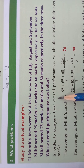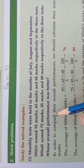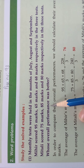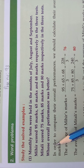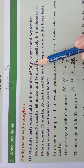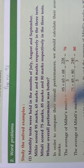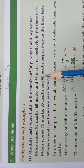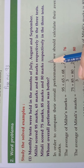In order to compare their overall performances, we should calculate their average marks. Mihir scored in July 95 marks, August 65 marks, September 68 marks. Mittali scored 75, 85, 80 marks respectively. In some months Mihir scored highest marks, in some months Mittali scored highest marks. So we can't directly compare - we need to find the average to determine whose performance was better.